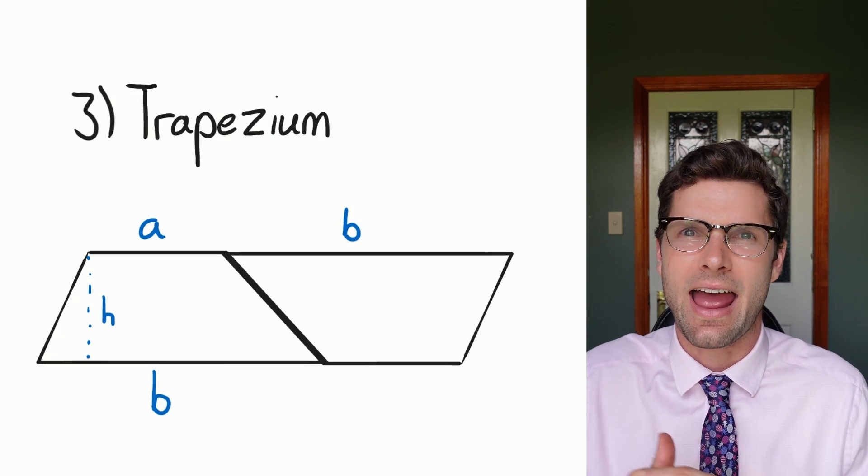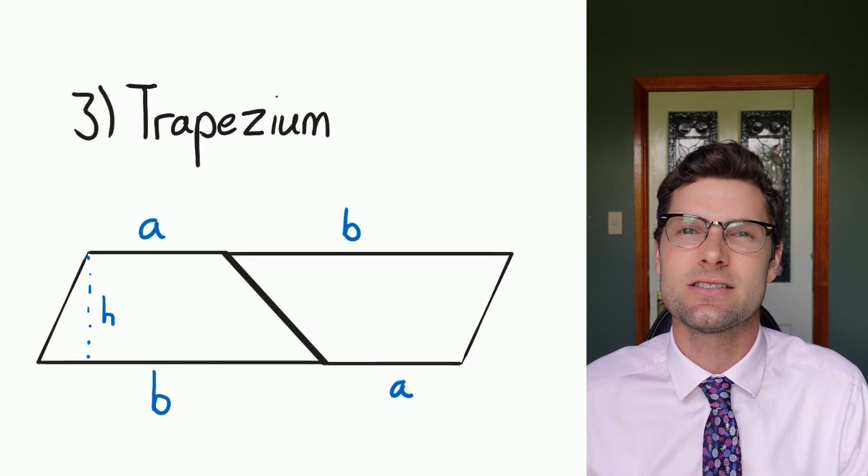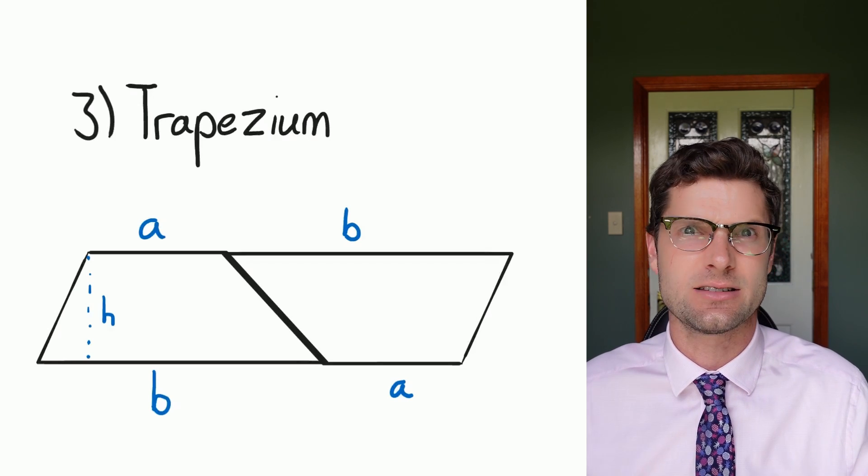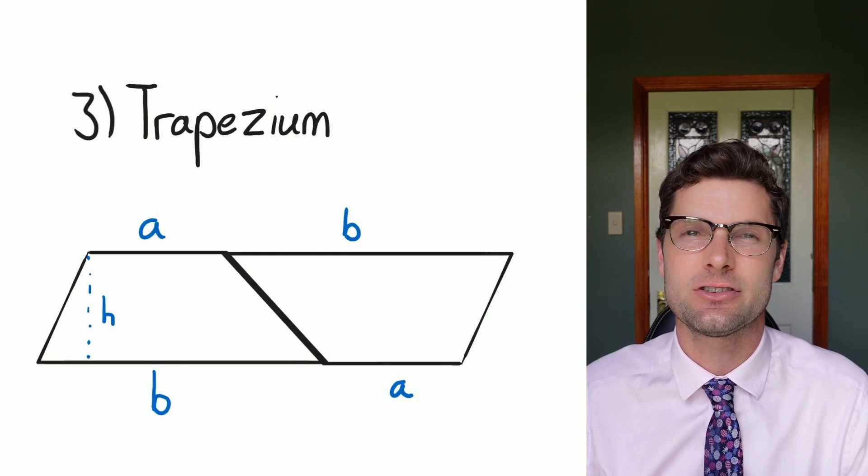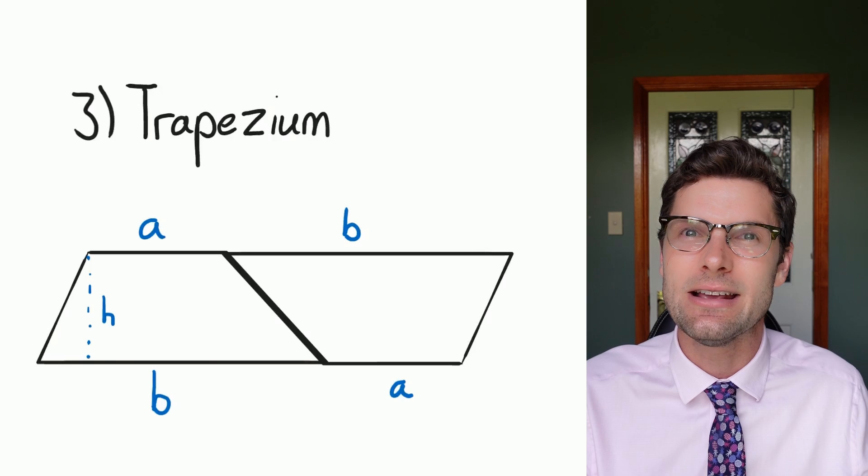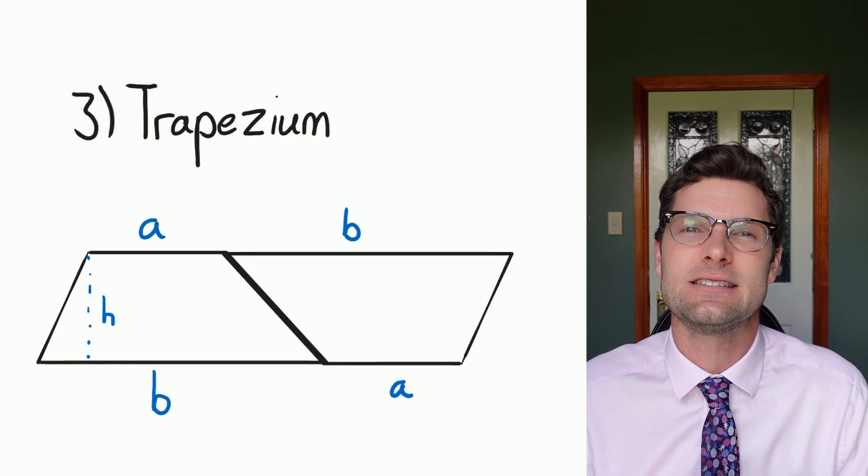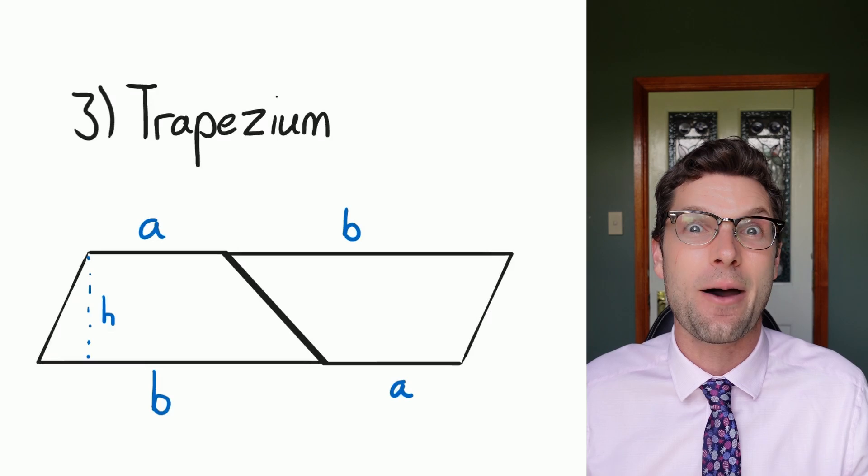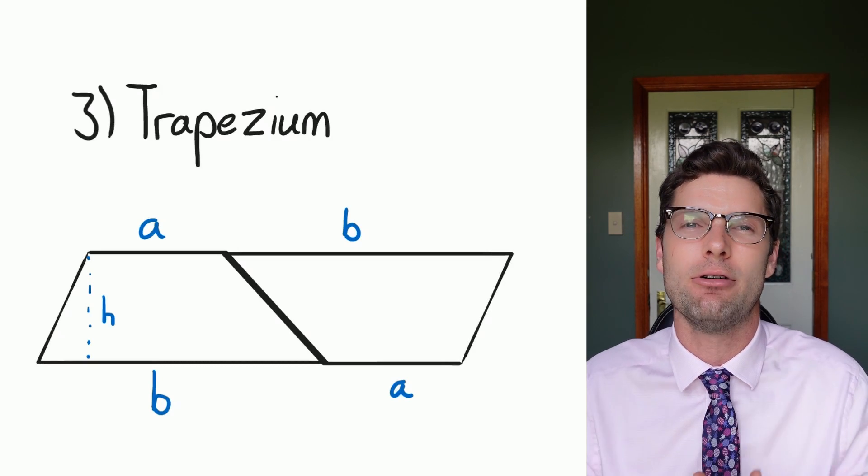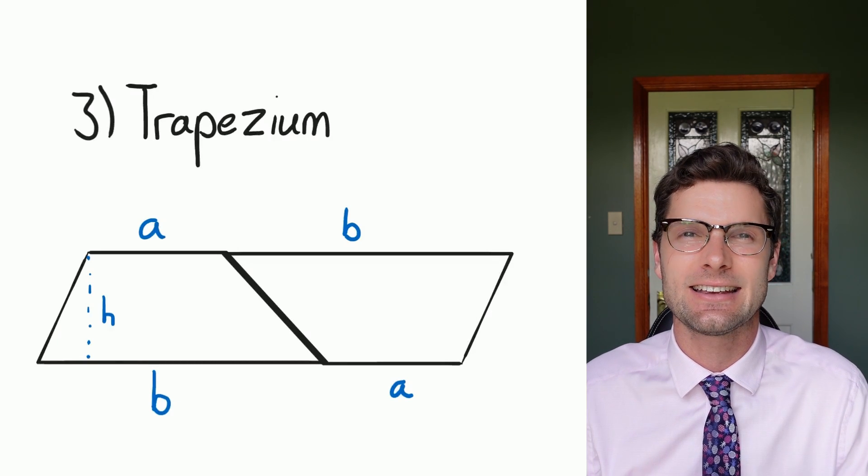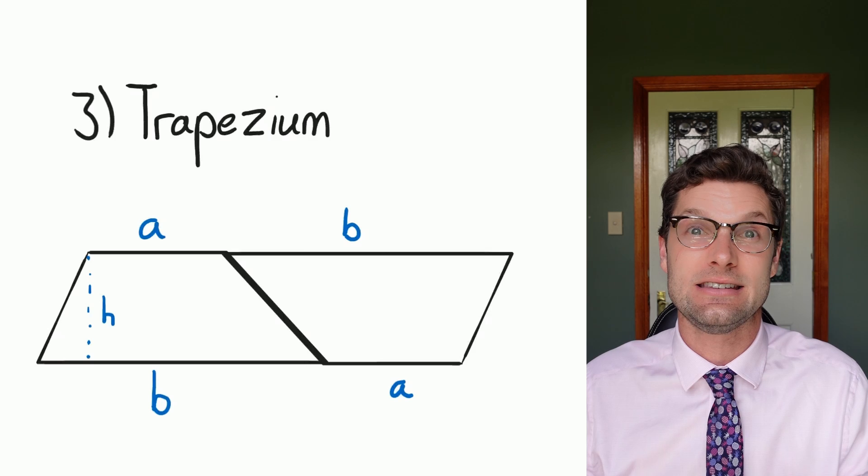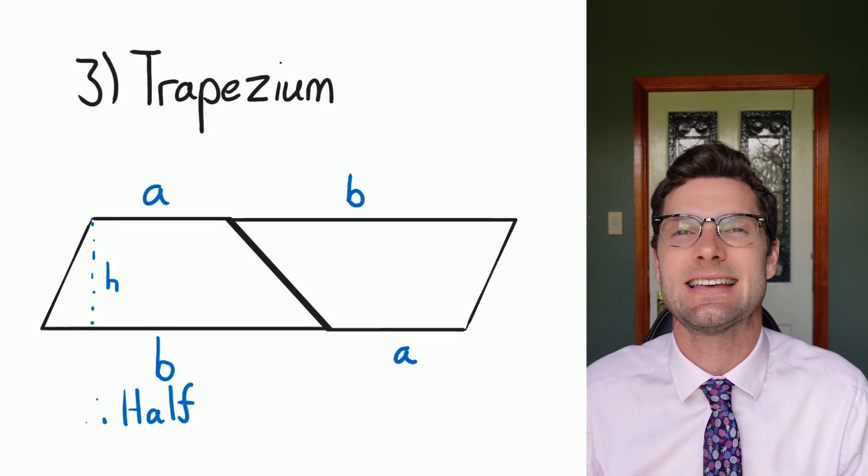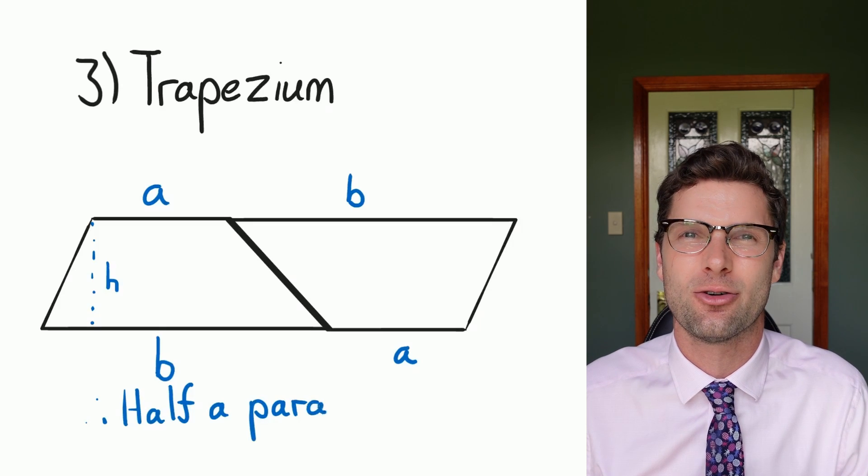So the entire length of that top must be A plus B. And the same thing happens on the bottom. I had that B length, I flipped it on its head, and that A gets put down next to it. So now this is a parallelogram. I've got two parallel lines that are the exact same length. And because I did exactly copy and paste it, I know those two side lengths are also the exact same length. So this is pretty cruisy.